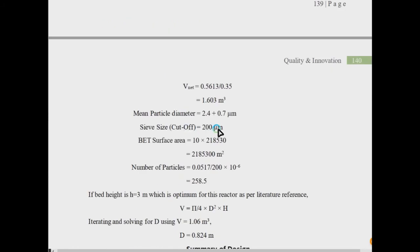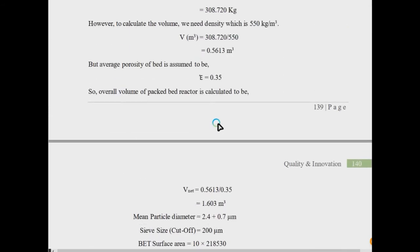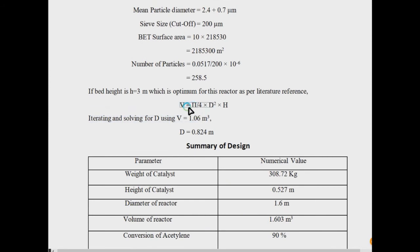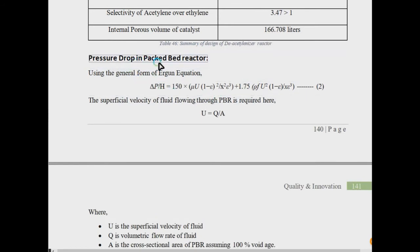We have to assume a bed height. We have H equals 3 which is optimum as per literature. We can find out diameter based on this because there is no other constraint from which you can relate volume to diameter and height. There is only one equation: V = (π/4)D²H. Only one equation available and there are two parameters unknown, D and H. So you have to assume something. I have assumed height so I get a diameter related to it. Now the design is almost completed.